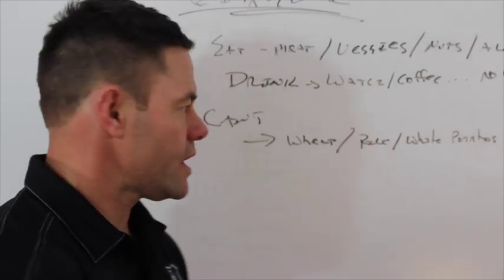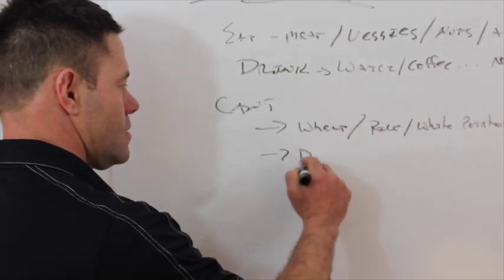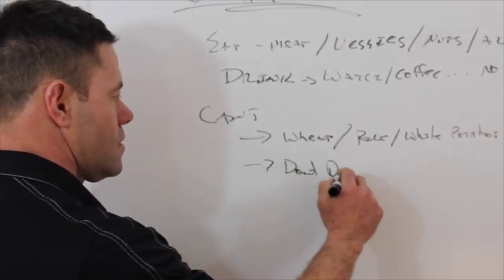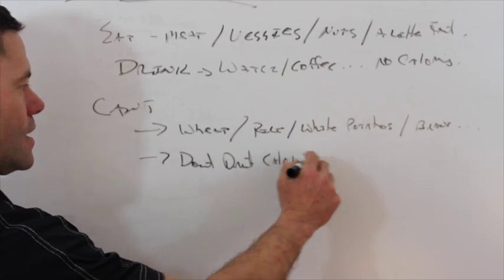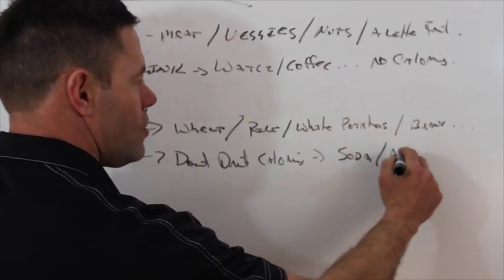You can get your carbs from vegetables. Don't get them from this other stuff. Don't drink calories. Soda is off the menu. Alcohol, off the menu.